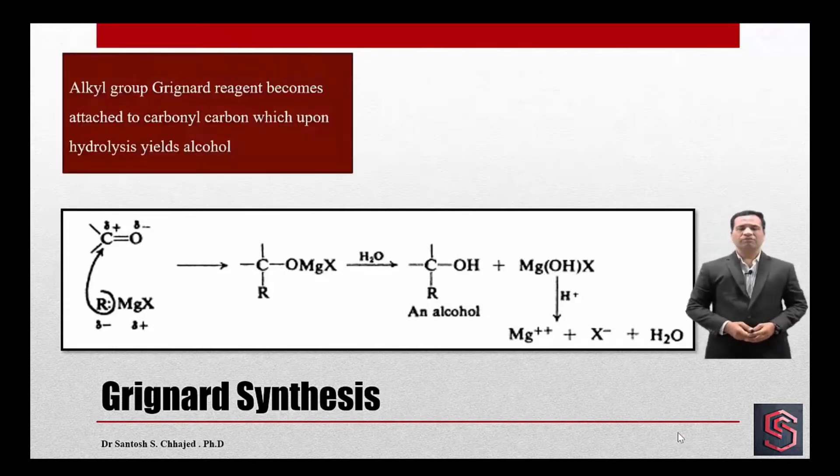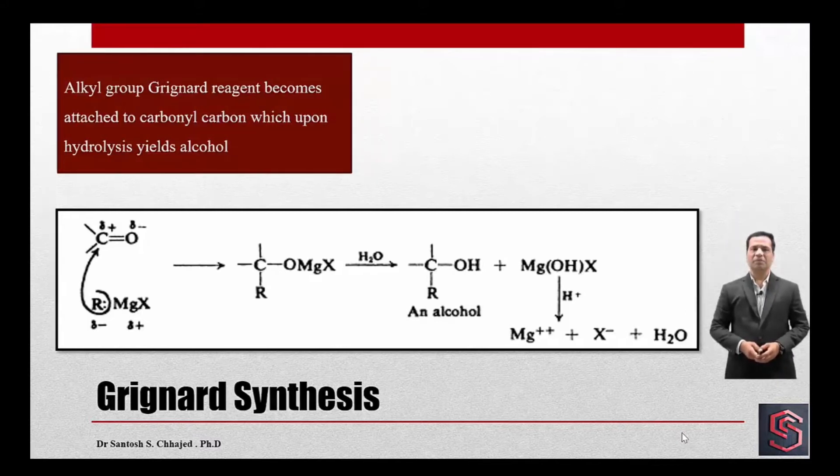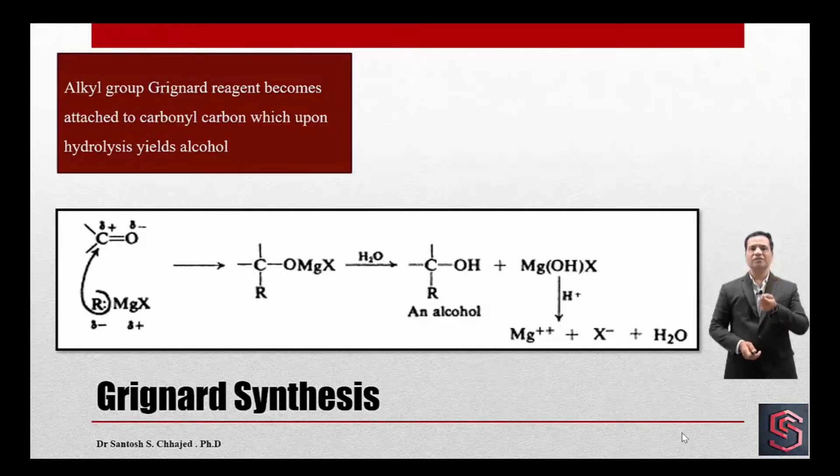Here, the alkyl group of Grignard reagent - you could see that there is electronegativity difference between carbon and magnesium. Carbon is more electronegative than magnesium, so it has got tendency to pull bonded pair of electrons towards itself. As a consequence of that, it has got delta minus charge and magnesium has got delta positive charge.